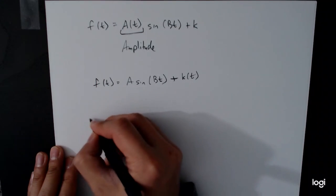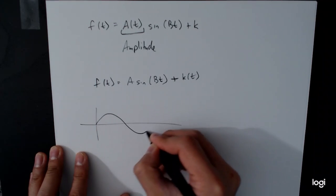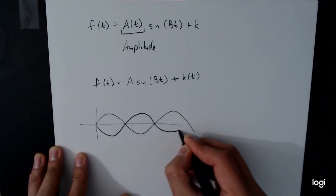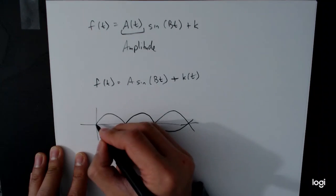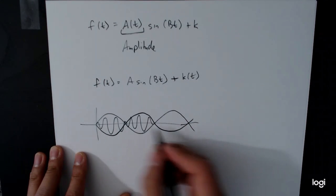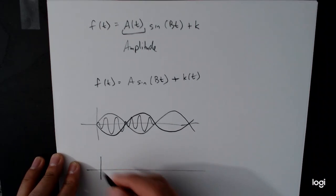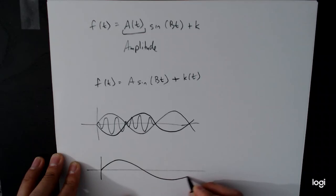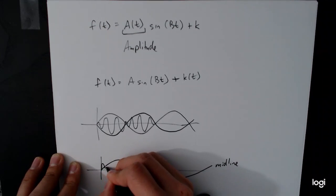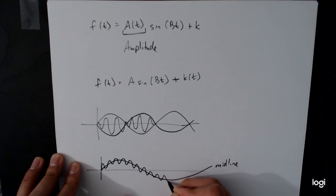If we had an envelope that looked like this and the vibration of the function was happening inside of that, the changing of the midline gives us now, instead, let's say the midline is an oscillating function. All of our oscillations now vary with the midline instead. And so you get this type of function.